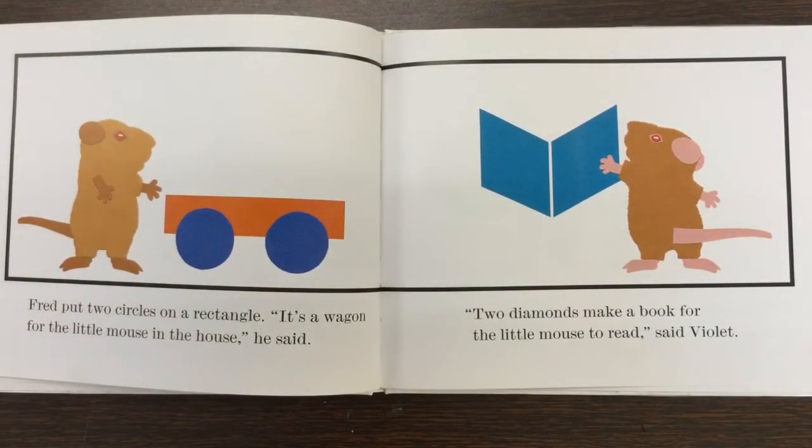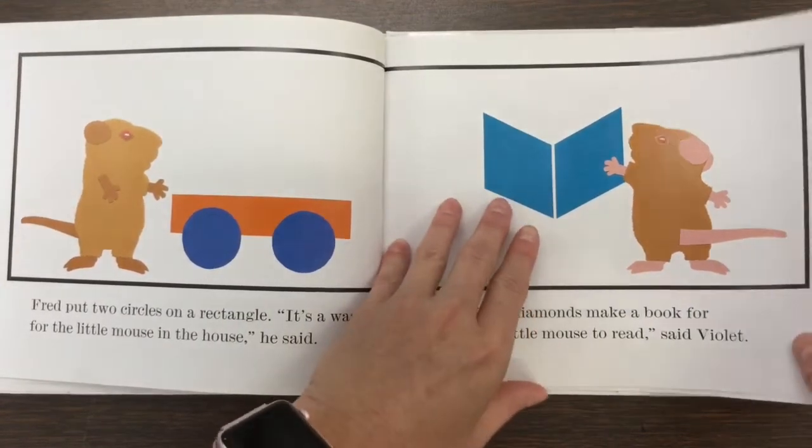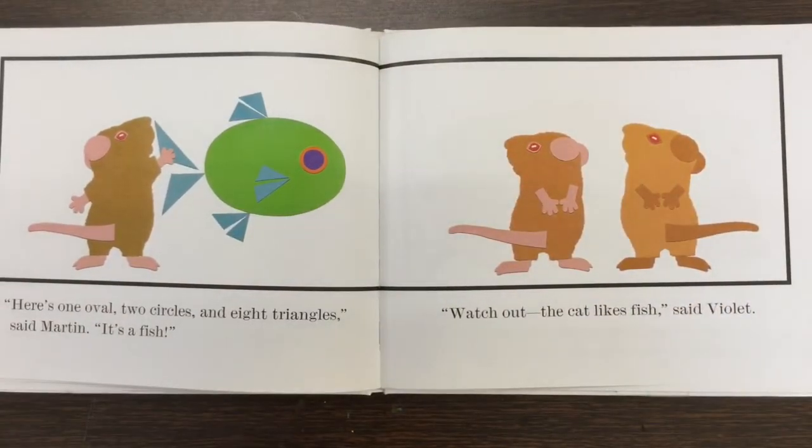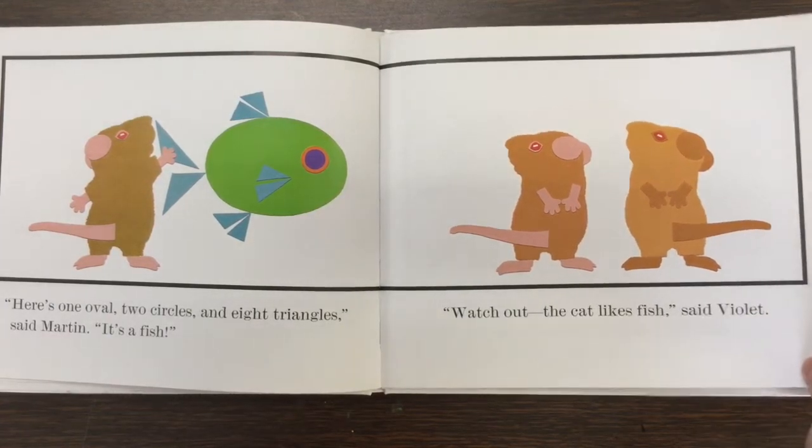Fred put two circles on a rectangle. It's a wagon for the little mouse in the house, he said. Two diamonds make a book for the little mouse to read. Here's one oval, two circles, and eight triangles, said Martin. It's a fish. Watch out, the cat likes fish, said Violet.